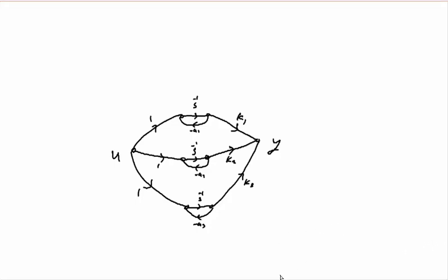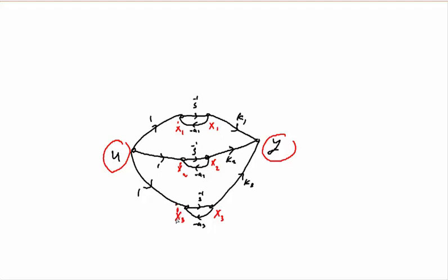We have here an input u, as you can see, and we have an output here. We have three states — we know this because we have three integrators. So we have here x1, x2, and x3, and these will be x1-dot, x2-dot, and x3-dot, because we have integrators: when we integrate, we get the states themselves.